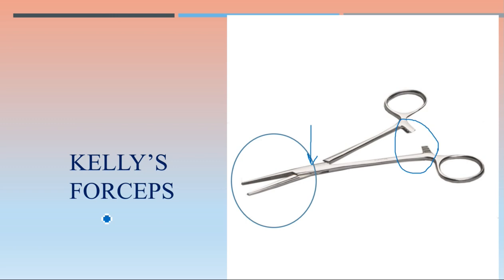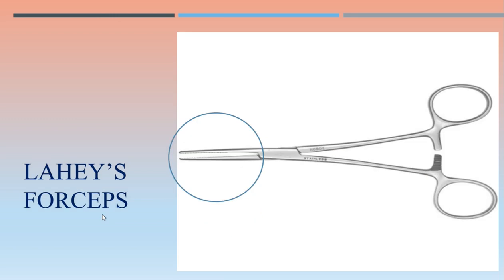Kelly's forceps is commonly known as medium artery forceps. Then Lahey's forceps — a long one. Lahey's forceps again has serrations, a long distal end, the joint is here, and the lock is present.